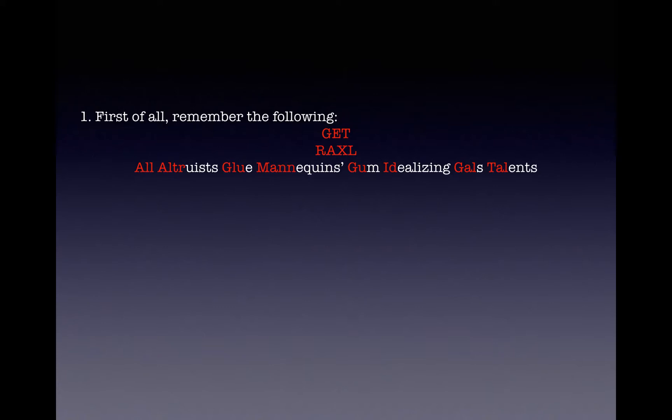Then it's easier to figure out the last ones. All is allose, altruists is altrose, glue is glucose, and mannequins is mannose.